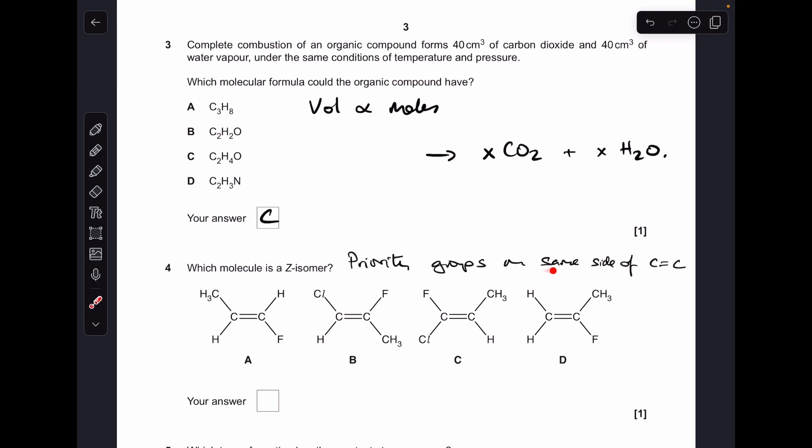Moving on to four. I've written up there: priority groups are on the same side of the C-C double bond. How do you work out the priority group? It's the one with the biggest atomic number. In A, carbon on the left is priority, fluorine on the right. They're on opposite sides, so it's not that one. B: chlorine's got the biggest atomic number on the left, fluorine on the right. There's the answer.